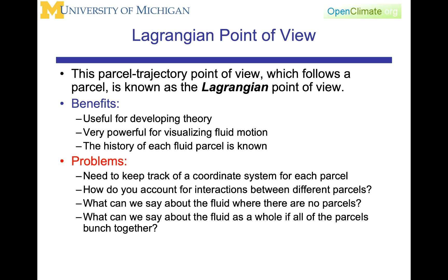The problems with the Lagrangian approach: you need to keep track of the coordinate system for each parcel, and you do not have an especially good way to account for interaction between parcels. What can we say about the part of the fluid that has no parcels? The parcels will tend to accumulate. Go back to the movie on the rotating flow and think of the dye in that movie — you can think of that dye as parcels. Those parcels accumulated in lines with strong gradients between different colors, and there were parts of the fluid that ended up with essentially no dye.